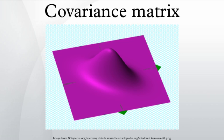If Z is a column vector of complex-valued random variables, then the conjugate transpose is formed by both transposing and conjugating. In the following expression, the product of a vector with its conjugate transpose results in a square matrix as its expectation.